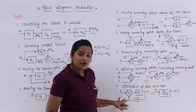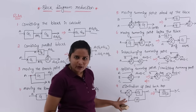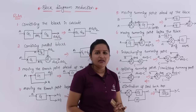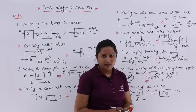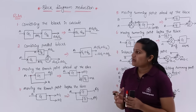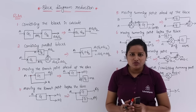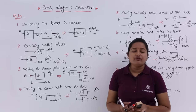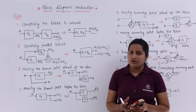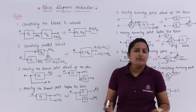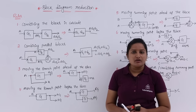Like this we can reduce the diagram. If you are having any feedback loops, you can reduce them this way. These are the block diagram reduction rules that we need to follow when reducing any block diagram in control systems.